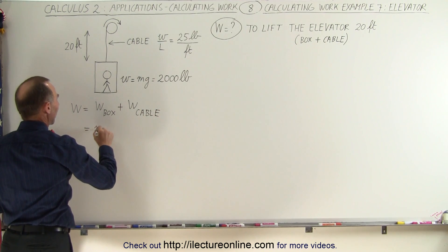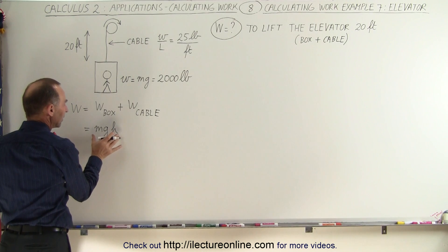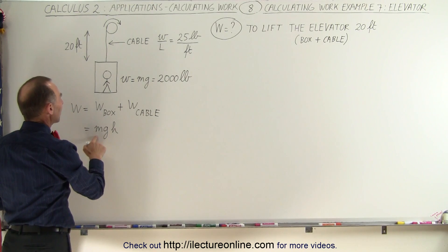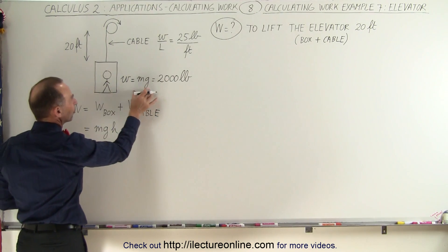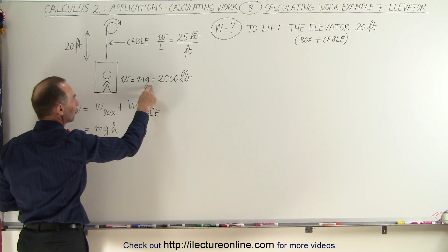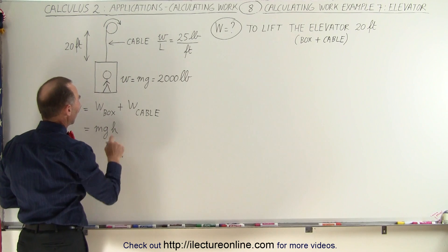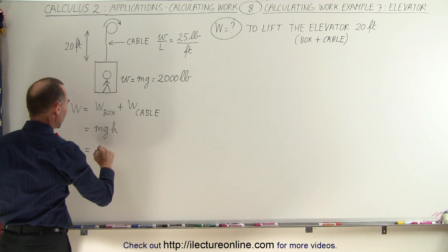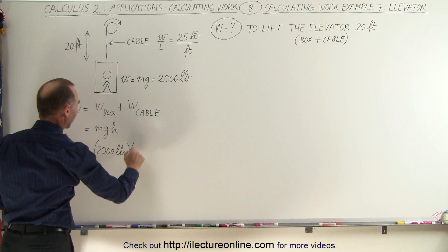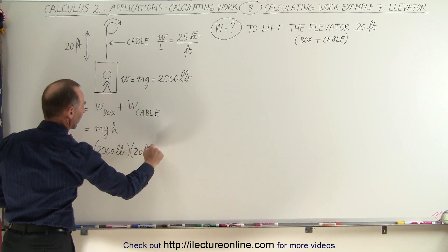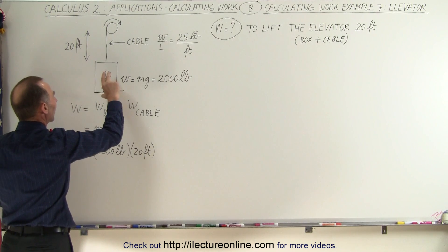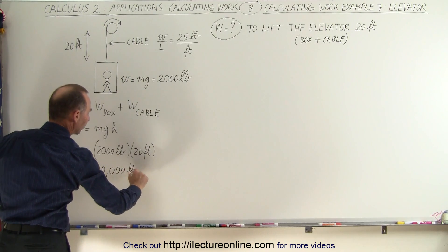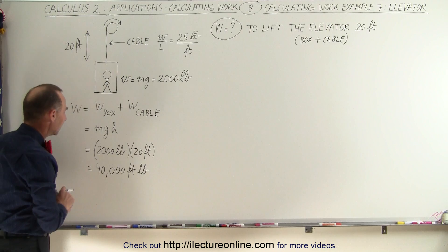For the box we can simply use MGH, because that's the additional potential energy the box will gain when we lift it up 20 feet. The mass of the box times G can be expressed in terms of pounds. In this case the weight — mass times acceleration due to gravity — is equal to 2,000 pounds, and we lift it through a height of 20 feet. So this portion equals MG of 2,000 pounds multiplied by the height of 20 feet, giving 40,000 foot-pounds — the unit for work in the English system.